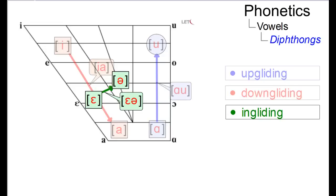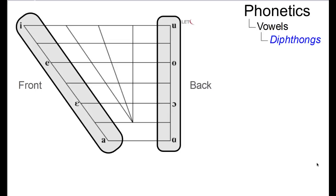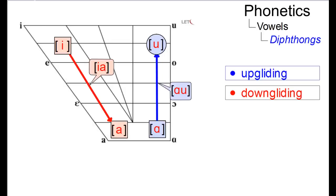Additionally, we can specify diphthongs further using the position of the offset, that is, front or back, as a reference point. So au would then be back-upgliding and ia front-downgliding.